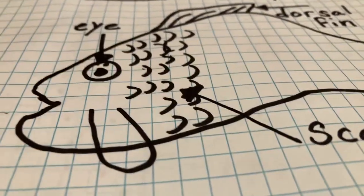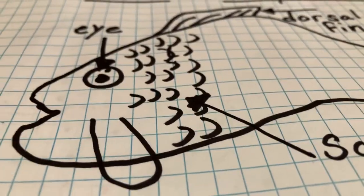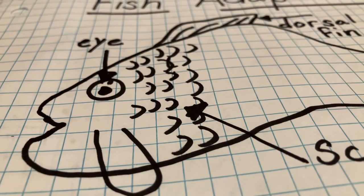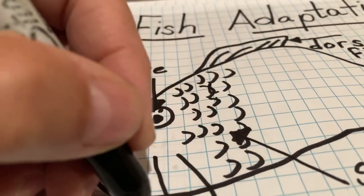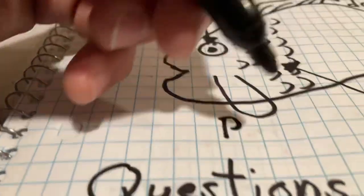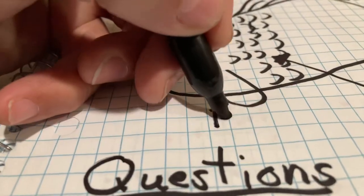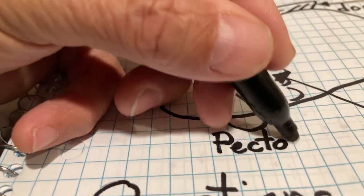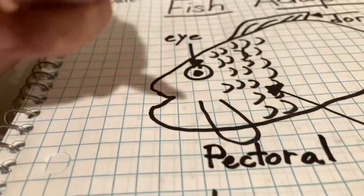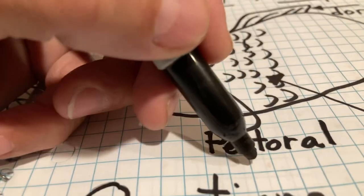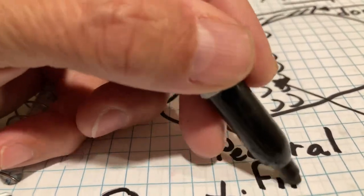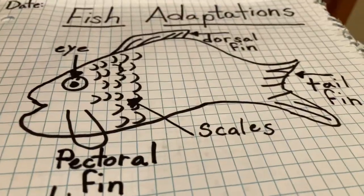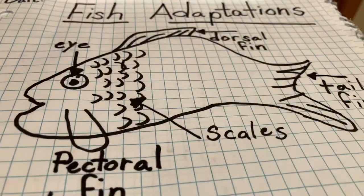This next one moves in more of a circular pattern and helps the fish stay in one place — this is called the pectoral fin. Write that down, and pause if you need to.